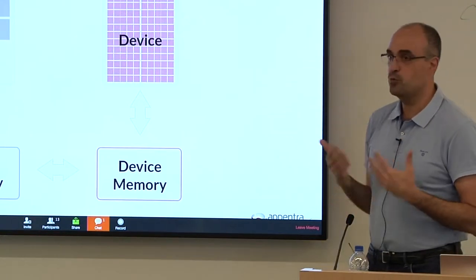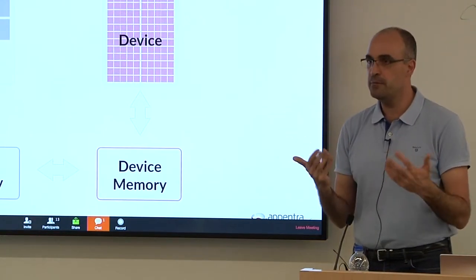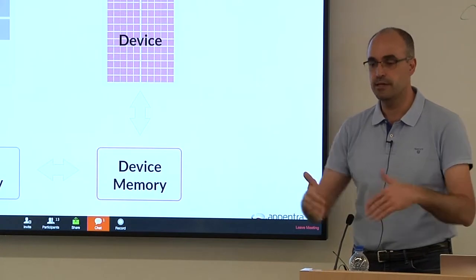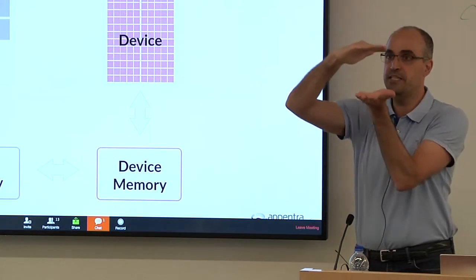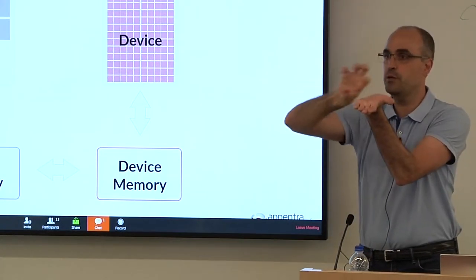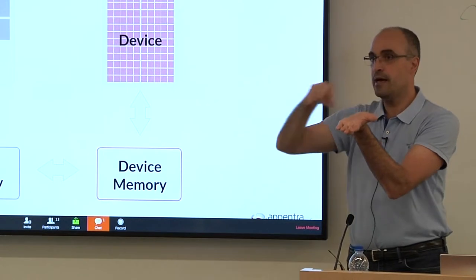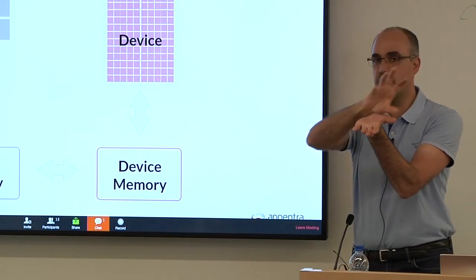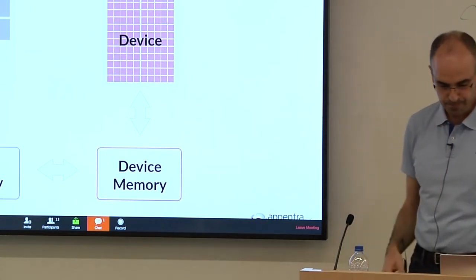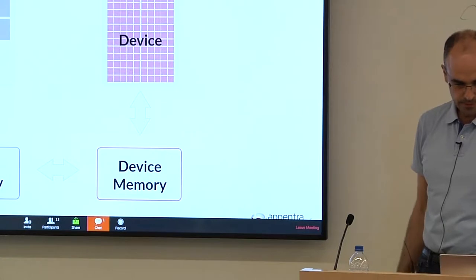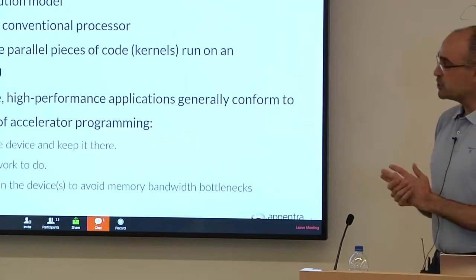This is essentially what you specify when you add OpenMP and OpenACC capabilities — you say which piece of code should be offloaded to the device, and you specify what data needs to be transferred.